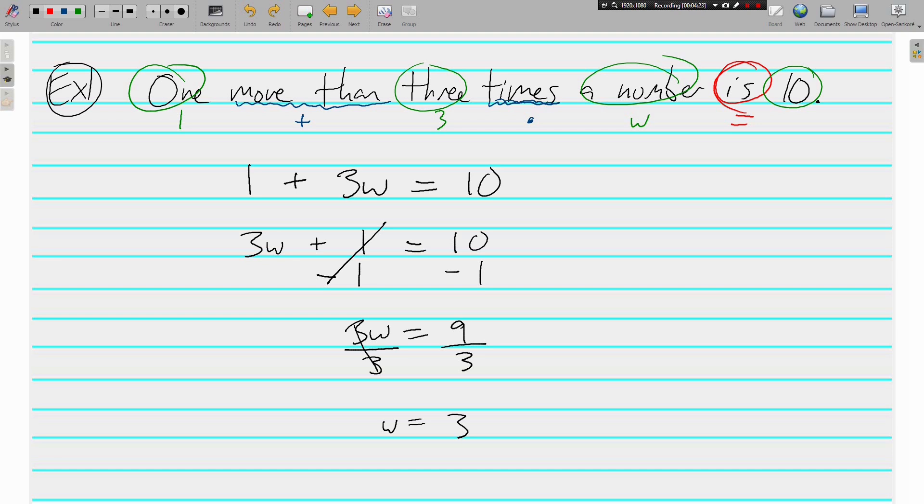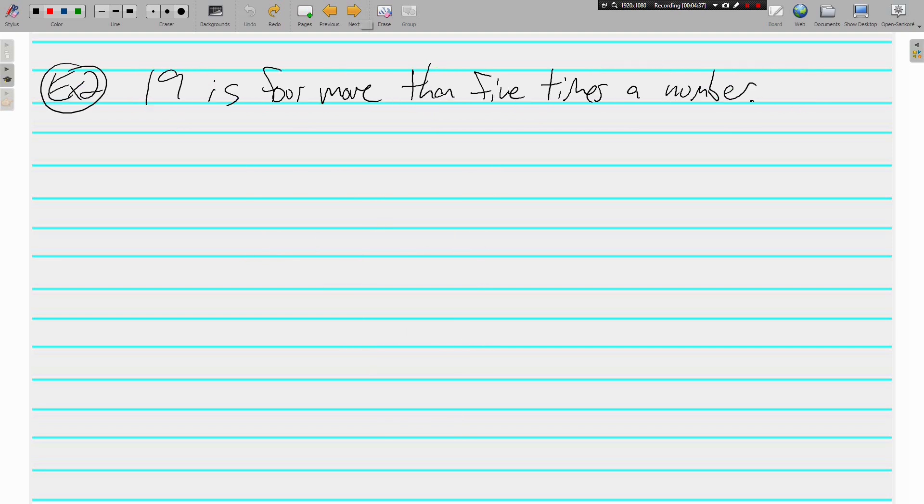So the solving is the same as it was when we talked about it earlier. Writing expressions is pretty much the same, except we've added an equal sign that says that two expressions are equivalent to each other. Example two, nineteen is four more than five times a number. Oh, I've got this is here again.